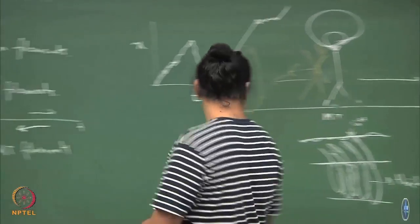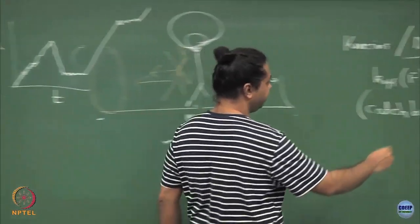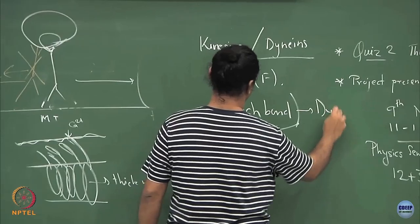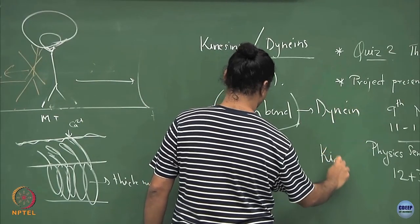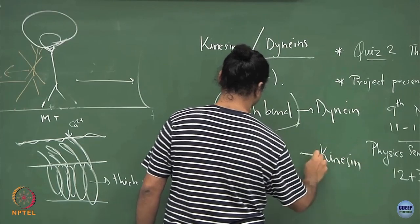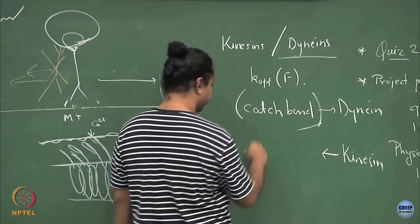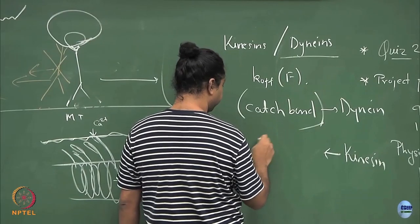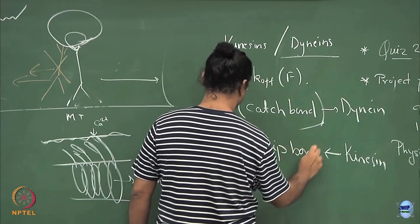Whereas for kinesin, the standard expectation — where the unbinding rate increases with force and the residence time decreases — is an example of a slip bond. So dyneins exhibit a catch bond and kinesins exhibit a slip bond.